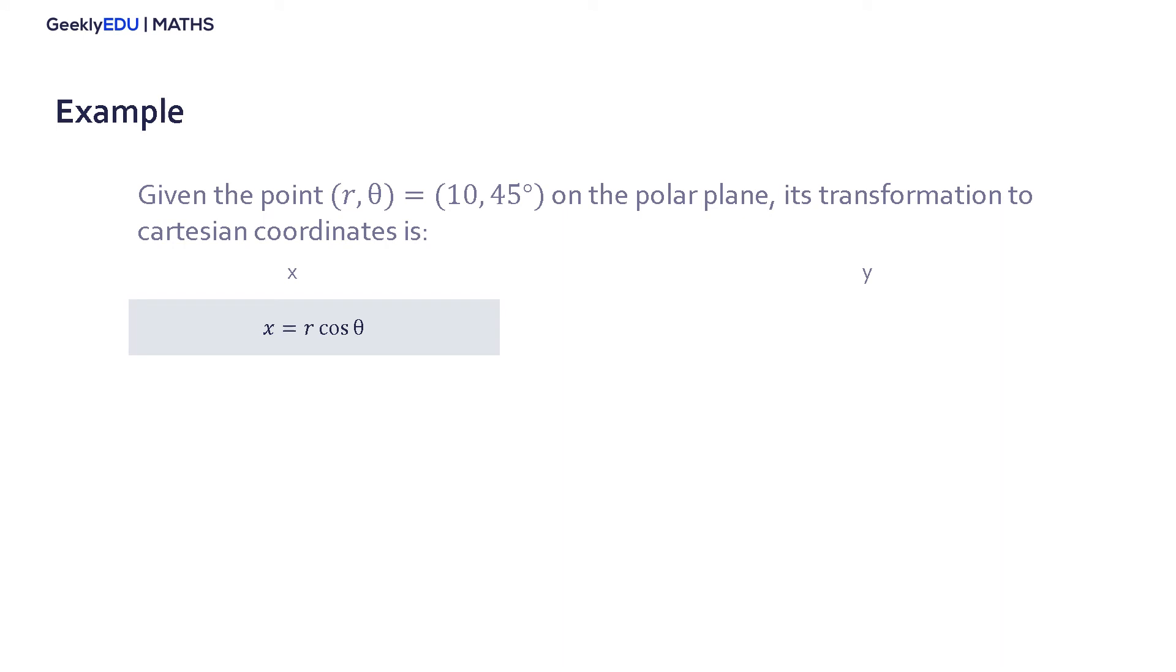x = r cos(θ) = 10 cos(45°). Cosine of 45 is equal to 1/√2, and multiplied by 10, it equals 5√2.